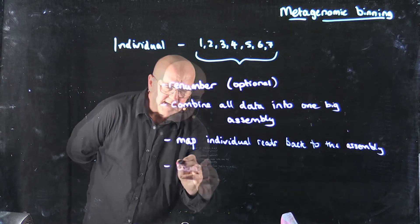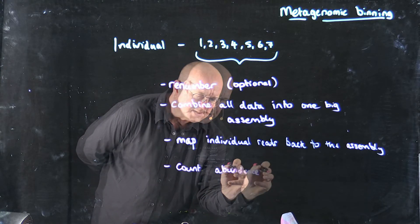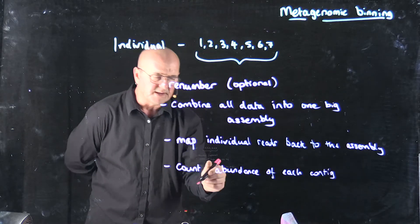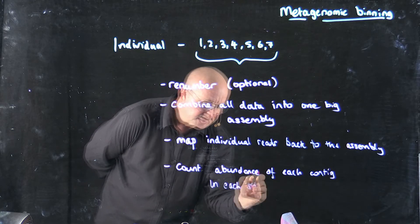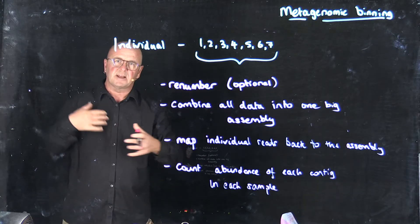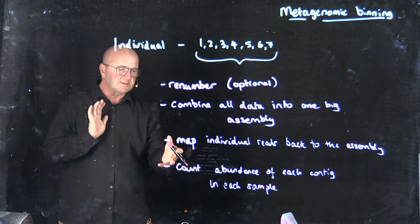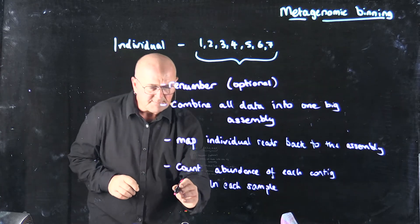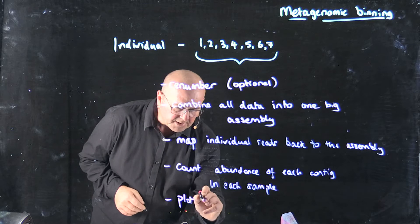We count the abundance of each contig, so that's the things that come out of our assembly in each sample. And so we basically just count abundance. We can normalize it by the length of the contig, we can normalize it by the number of the reads. But basically, we count the abundance, and then we plot a graph.